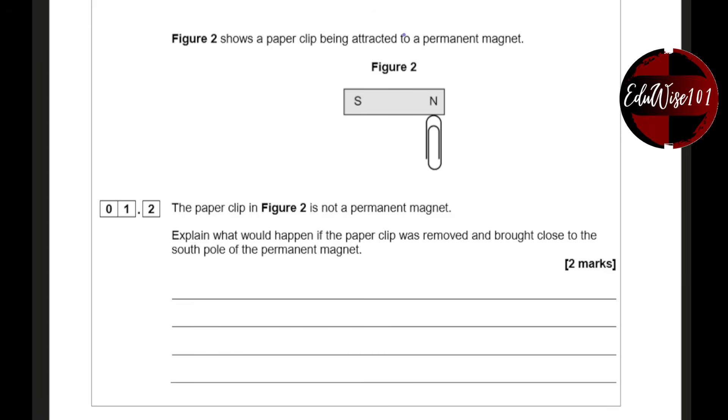So what they're saying is if you remove this paper clip and brought it over here, what will actually happen? Now, because this is not a permanent magnet, this is what you could call an induced magnet. The paper clip is magnetic. That's why it's sticking to the permanent magnet.